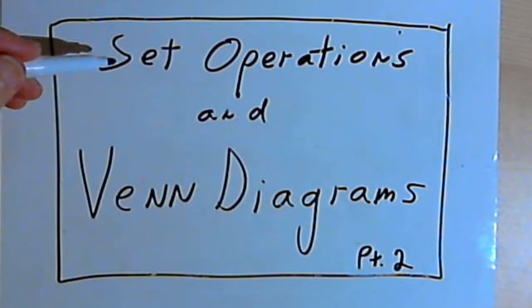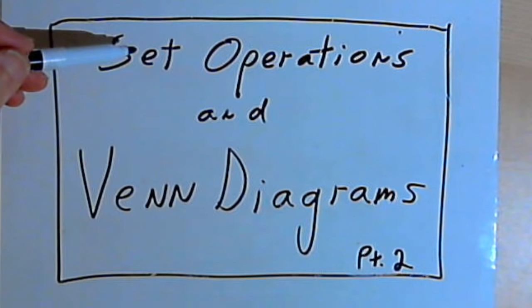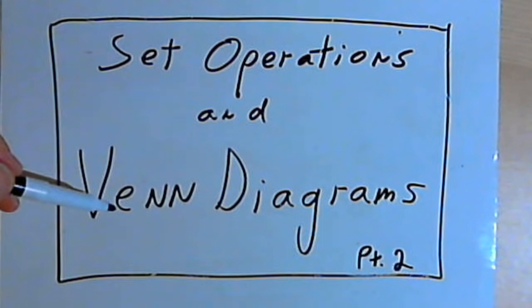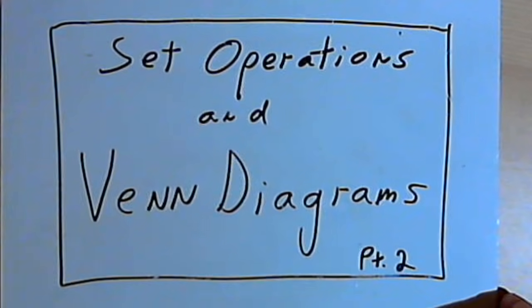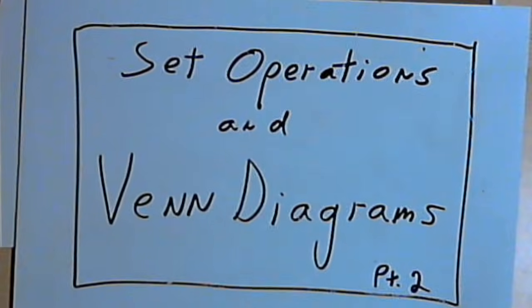This is going to be the second video about set operations and Venn diagrams. In this video, what I want to do is deal with set operations involving three different sets.